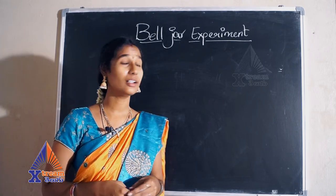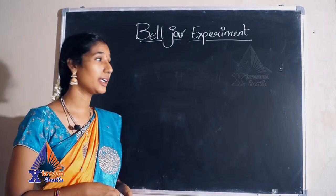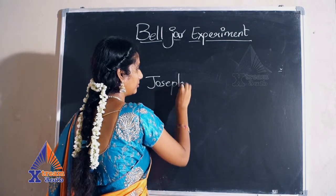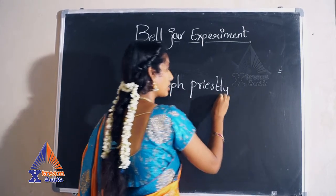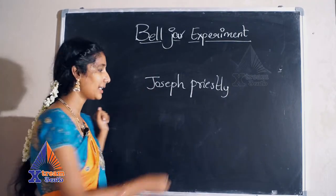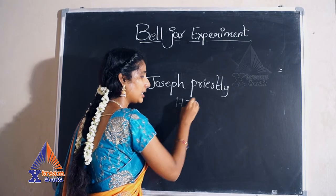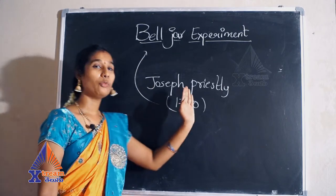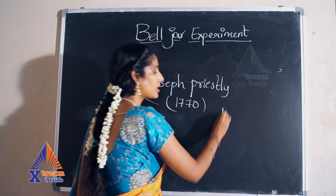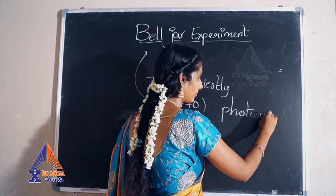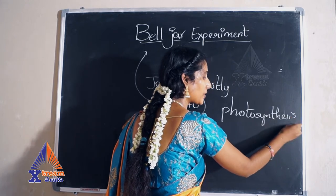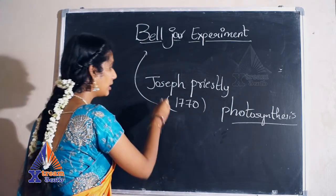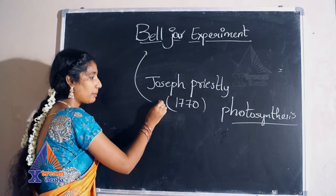Hi guys, welcome to Extreme Telco channel. We are going to discuss the Bell Jar experiment. The Bell Jar experiment was discovered by Joseph Priestley, who did this experiment in the year 1770. While doing this experiment, photosynthesis was not discovered — the complete process of photosynthesis was not known at this time when Joseph Priestley was doing the Bell Jar experiment.